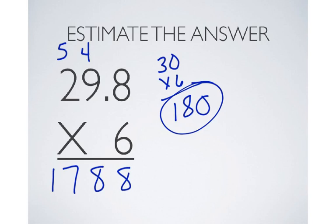But that's by ignoring the decimal point. Now, I need to figure out where to put the decimal point based on my estimate of 180.